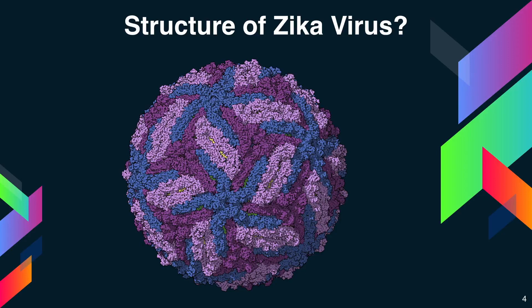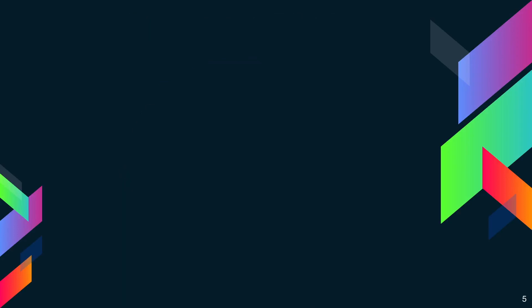Zika virus can use humans as the only vertebrate host. Aedes aegypti is the major culprit of spreading these viruses because it not only lives in close association with humans but also feeds almost exclusively on humans, whereas other mosquitoes do not have such human-restricted feeding behaviour.